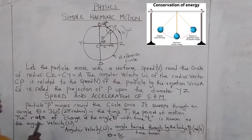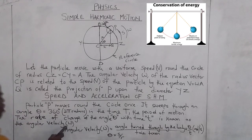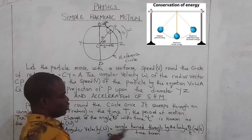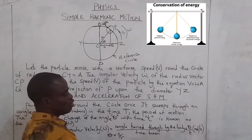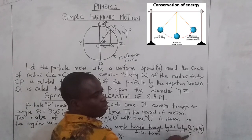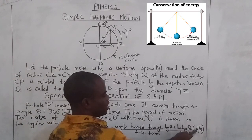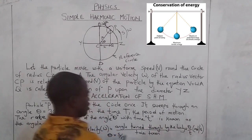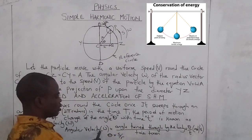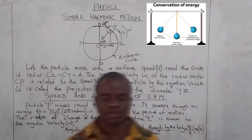The rate of change of the angle theta with time t is known as the angular velocity. Angular velocity w equals the angle turned through by the body over time taken — the formula is theta over t. Theta is the angle turned through by the body in radians, time is in seconds, and the unit of angular velocity w is radians per second.